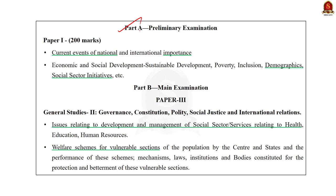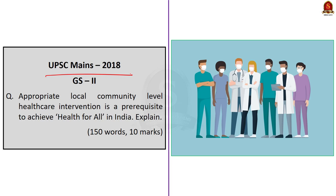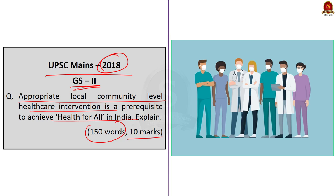Before that, the syllabus relevant to this news article is highlighted here for reference. Before getting into the discussion, look at this main question asked in the year 2018 in GS Paper 2: 'Appropriate local community level health care intervention is a prerequisite to achieve health for all in India. Explain.' This is a 150-word, 10-mark question. The reason I chose this question is because you can relate the data from the data point to answer it. We will discuss the question after discussing the data.